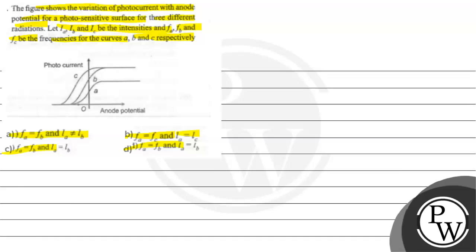यहाँ पर हम बात करें इसके solution की, तो solution में सबसे पहले हम देखेंगे key concept को. ध्यान रहें, जब भी कभी बात होती है saturation current की या I saturation की, तो यह directly proportional होता है intensity के. और अगर हम stopping potential की बात करते हैं, stopping potential जो होता है, यह directly proportional होता है frequency के.